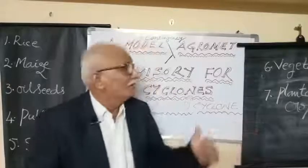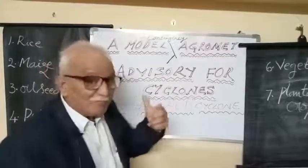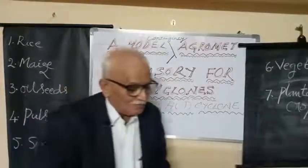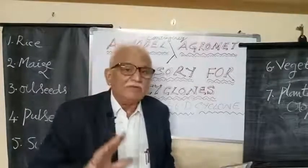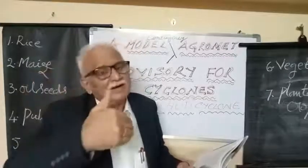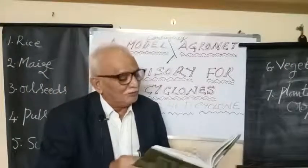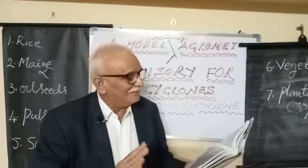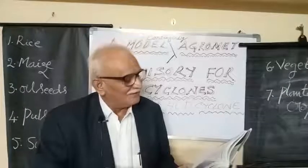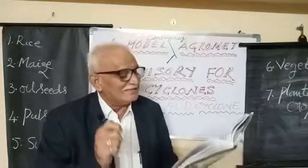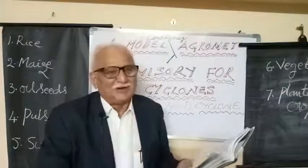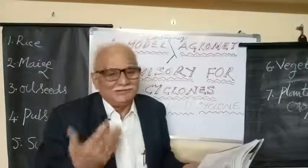Now this is a model agronomic advisory for cyclone. I have taken the example of the Hudhud cyclone, which occurred on 12th October 2014. It affected Andhra Pradesh in southern India, Odisha, and later the northern parts of India including Nepal. This is from my book 'Principles and Practices of Agriculture Disaster and Environment.' I have collected a stepwise advisory for reference, adoption, and contingency measures to minimize and prevent further damage to agricultural standing crops.